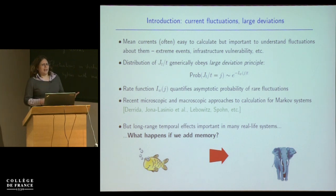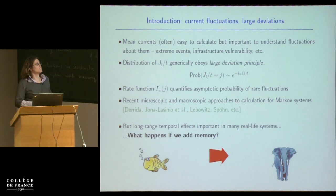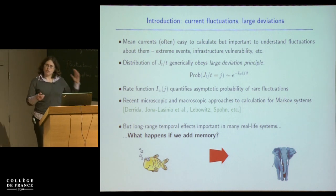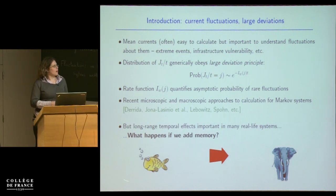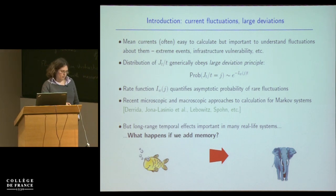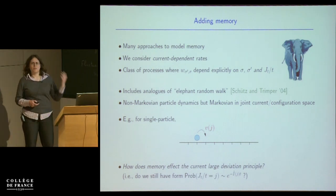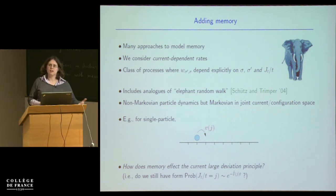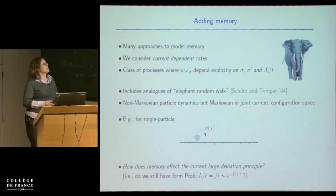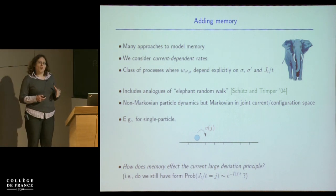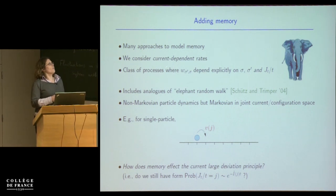In real life, very often the history of a process is important — there are long-range correlations in time. So what I want to do is to go from this Markovian framework and add some memory: to go from the goldfish, which is popularly assumed to have no memory, to the elephant, which is supposed to remember everything. There are probably as many different ways to add memory as there are people working on non-Markovian systems, but for now we're going to consider one particular way — making the rates depend on the current in the past.